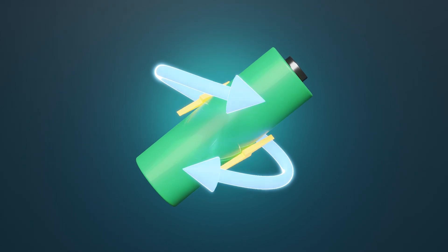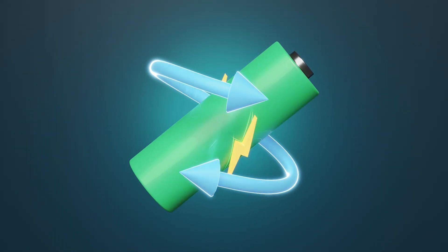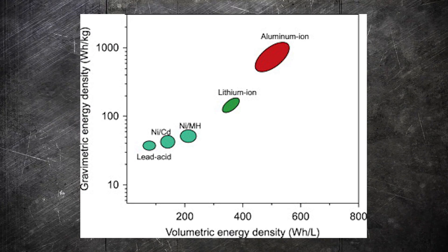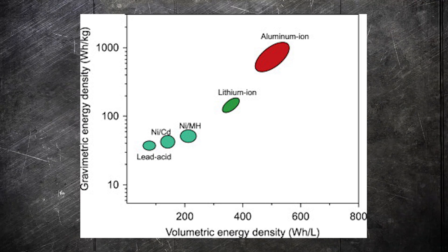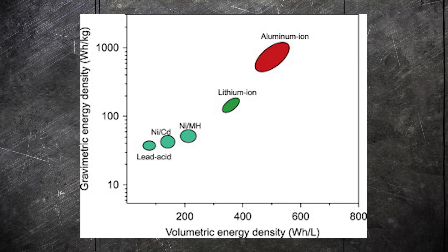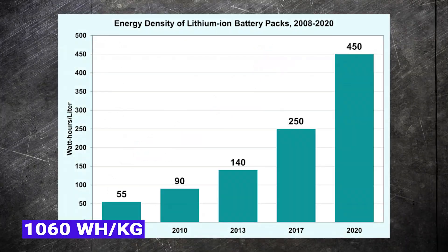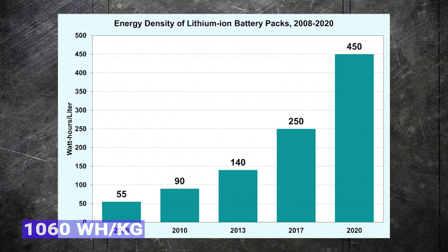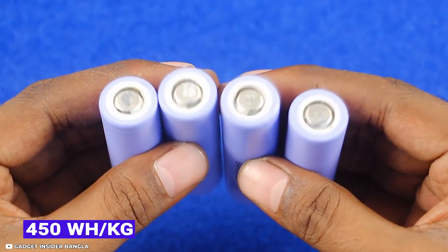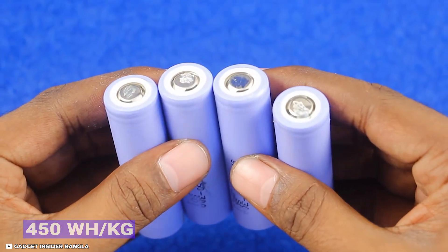We also have a significantly higher capacity, at least theoretically, because the theoretical energy density for aluminum ion batteries is noticeably higher, with 1060 watt-hours per kilogram in comparison to lithium ion batteries, with about 450 watt-hours per kilogram nowadays.